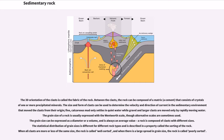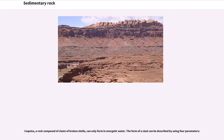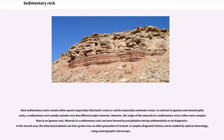The grain size can be expressed as a diameter or a volume and is always an average value. The statistical distribution of grain sizes is different for different rock types and is described in a property called the sorting of the rock. When all clasts are more or less of the same size, the rock is called well sorted, and when there is a large spread in grain size, the rock is called poorly sorted. Chemical sedimentary rocks have a non-clastic texture, consisting entirely of crystals, requiring only the average size of crystals and fabric to describe.